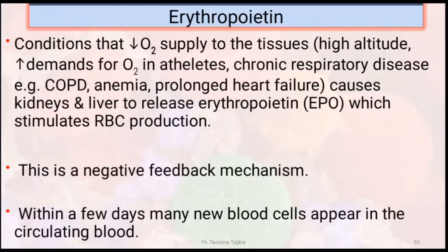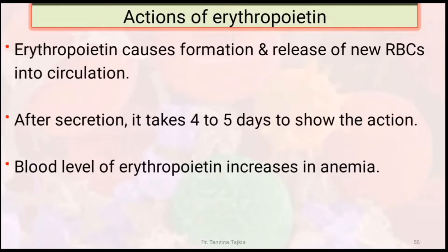Conditions that decrease oxygen supply to the tissue — that means high altitude, increased demand for oxygen in athletes, chronic respiratory disease (COPD), anemia, and prolonged heart failure — cause the kidney and liver to release erythropoietin, which stimulates red blood cell production. This is a negative feedback mechanism. Within a few days, many new blood cells appear in the circulating blood. After secretion, it takes four to five days to show the action.